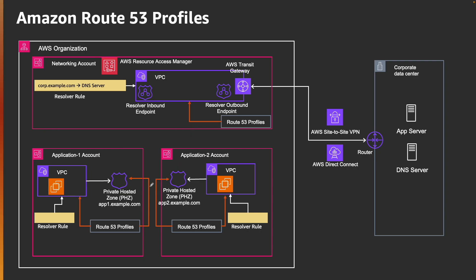Second, you can remove the association of these private hosted zones with the networking account VPC. Now any requests originating from your on-prem corporate data center will come to your resolver inbound endpoint. These VPCs are not directly associated, but the endpoint checks and finds a Route 53 profile associated, and through that profile the private hosted zone is associated. So the inbound resolver endpoint is able to resolve these DNS names. You don't need to use any CLI to associate the private hosted zone with the central VPC — just associate it with the profile, and every account associated with the Route 53 profile will be able to resolve those private hosted zones.